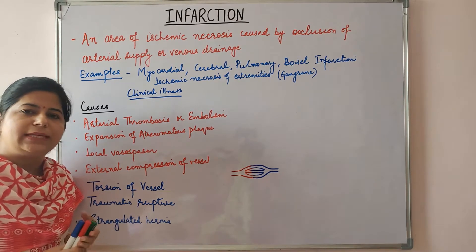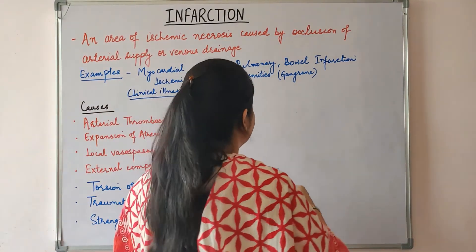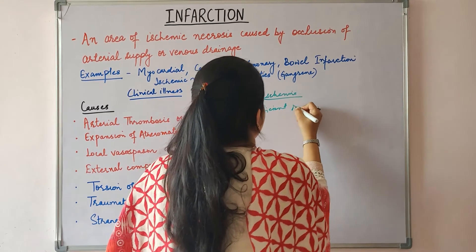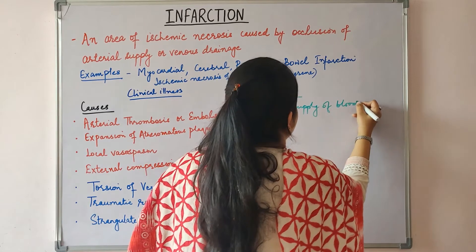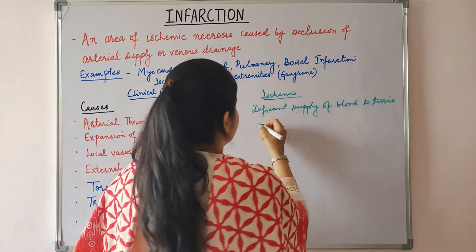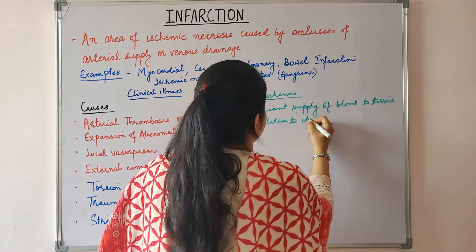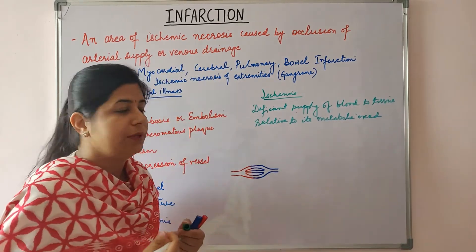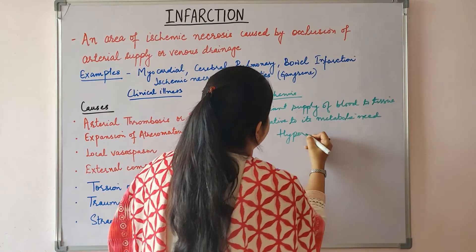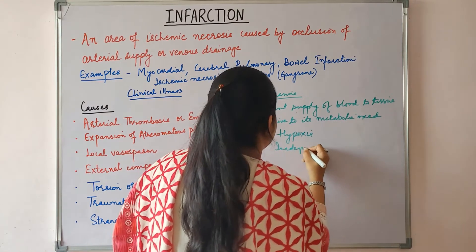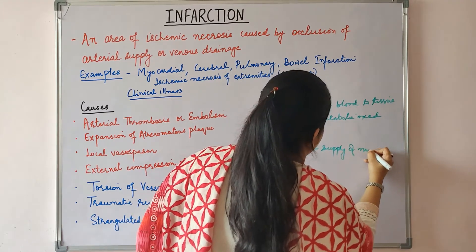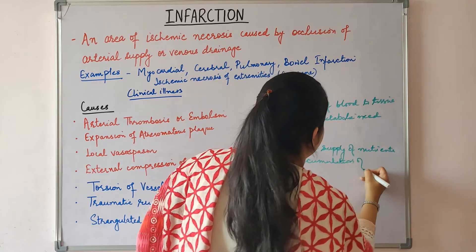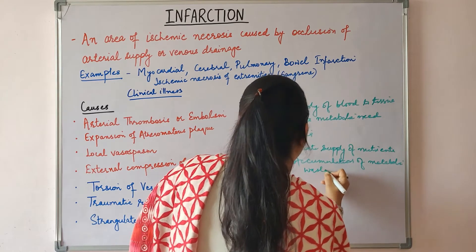Ischemia is an important cause of cell injury. Ischemia is deficient supply of blood to tissue or a part of tissue relative to its metabolic need or demand. Ischemia leads to hypoxia, inadequate supply of nutrients, and accumulation of metabolic waste products.